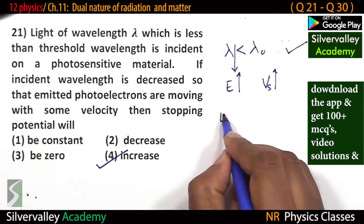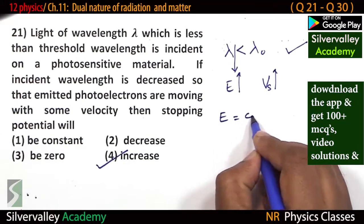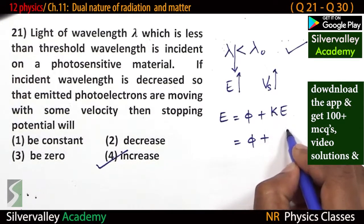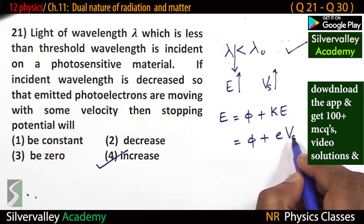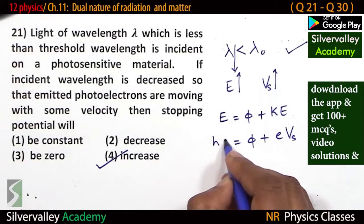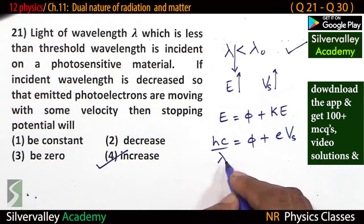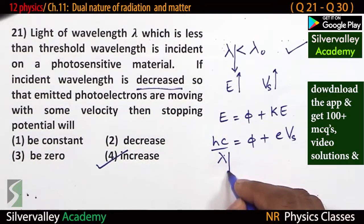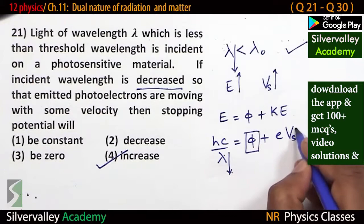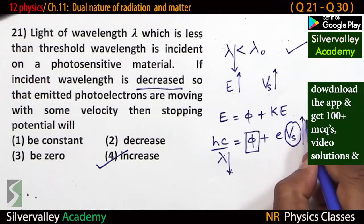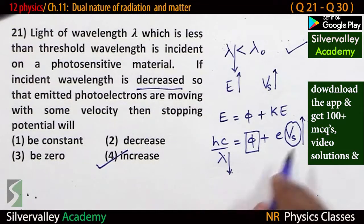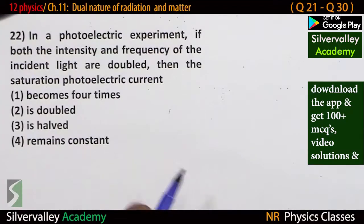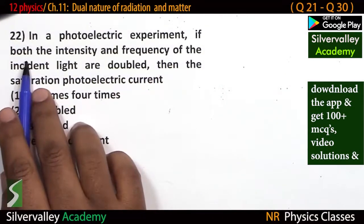Understand this through the equation: E equals work function plus kinetic energy. Work function plus kinetic energy equals e times stopping potential, and this equals hc by lambda. If incident wavelength is decreased, and work function is constant, then stopping potential should increase — that is the meaning.